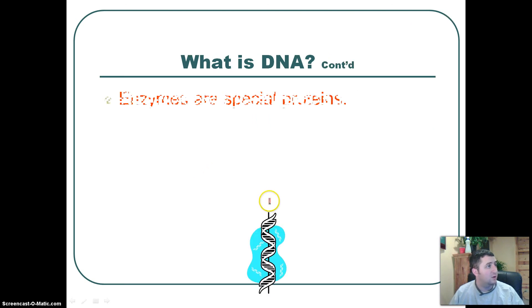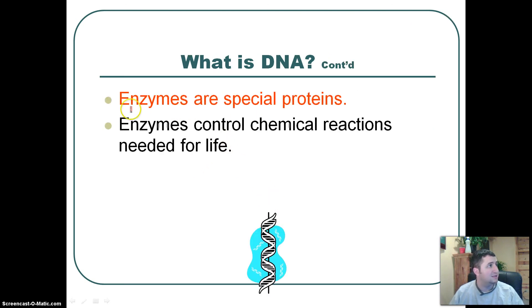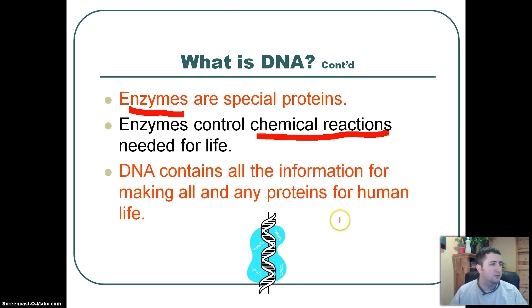And one important thing to know about proteins is that some of them are also enzymes. Enzymes can control chemical reactions in your body. So ultimately, if you had DNA that screwed up, it would produce proteins that screwed up. If it produced enzymes that are screwed up, those chemical reactions would be screwed up. So DNA contains all the information for making all proteins in the human body.